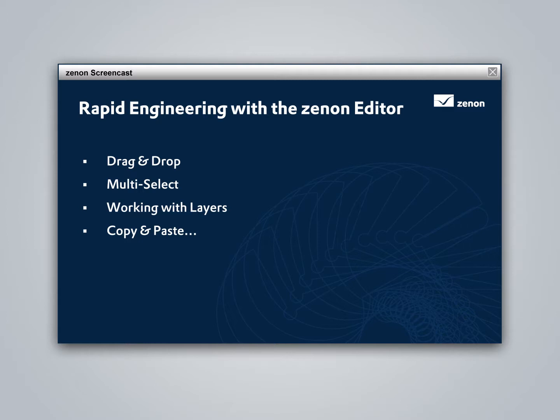Many well-known usability features in the Xenon editor enable rapid project engineering. Users can quickly and easily copy and paste, drag and drop, multi-select and view, as well as work in the various functional layers of a project. This is rapid project engineering at its finest.